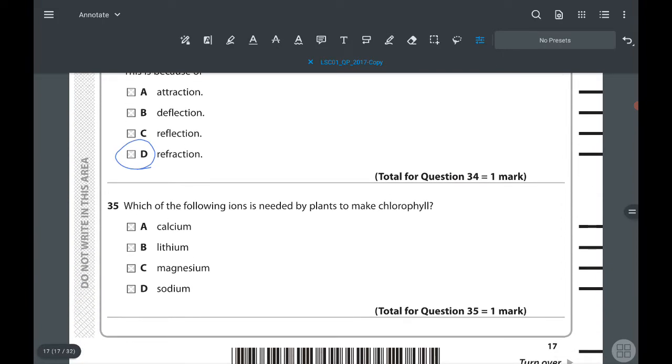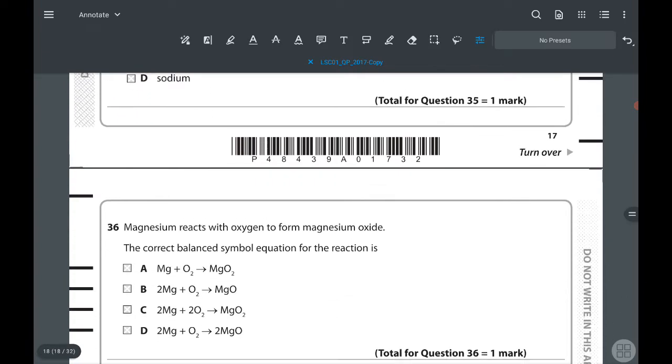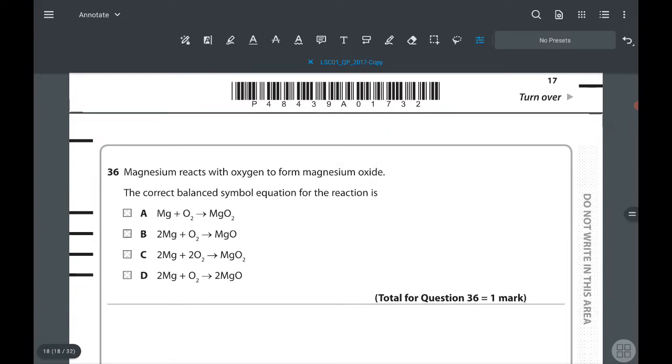35: which of the following ions is needed by plants to make chlorophyll? We discussed in a previous question the different types of minerals that plants require. Magnesium is also one of those, and magnesium helps to create the chlorophylls. Next question: magnesium reacts with oxygen to form magnesium oxide. The correct balanced symbol equation for this reaction will be Mg plus O2 gives MgO. But we need to balance it, so the answer will be D. If you can't figure this out, please check my other video about balancing equations.